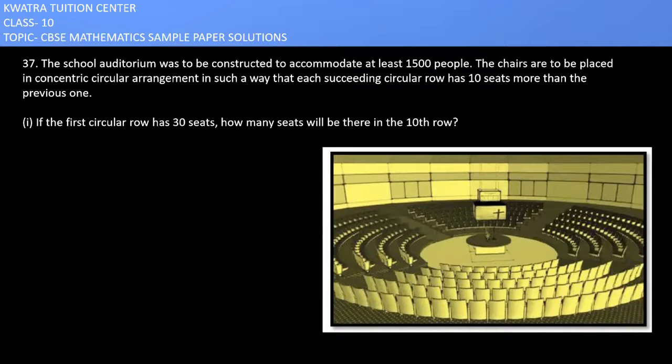So question number 31, 37 sorry. It says the school auditorium was to be constructed to accommodate at least 1500 people. The chairs are to be placed in concentric circular arrangement in such a way that each succeeding circular row has 10 seats more than the previous one.